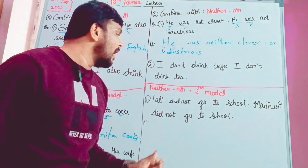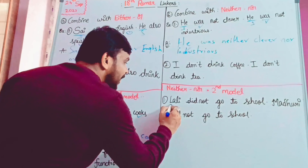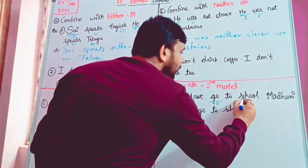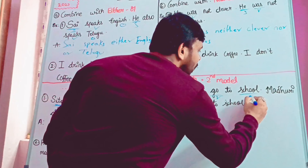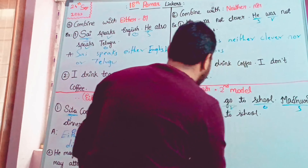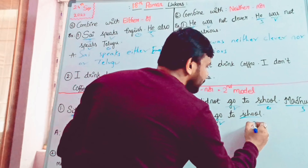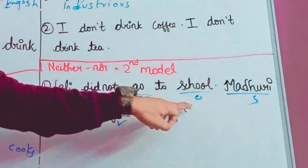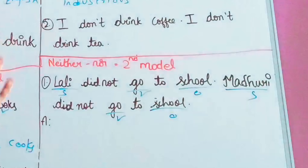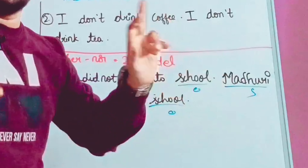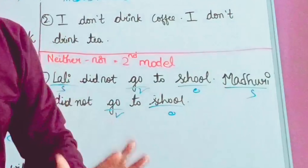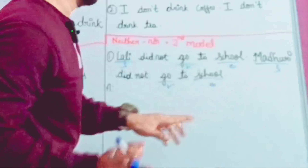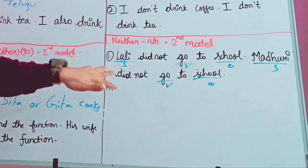Next: Lali did not go to school. Mother did not go to school. Here — subject, verb, object. First: subject, verb, object. Second: subject, verb, object. First subject is Lali, second subject is Mother — two subjects. Either or neither? This is the second model.